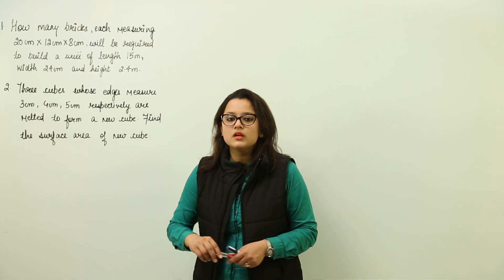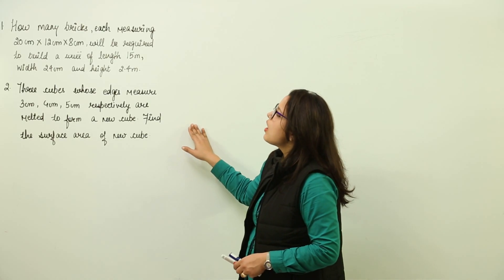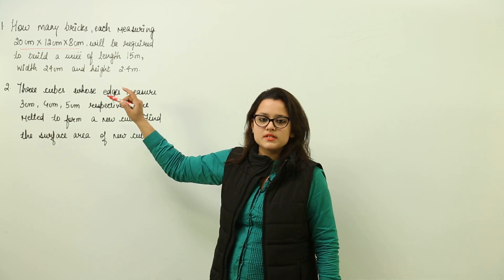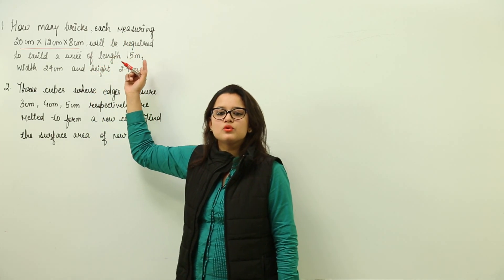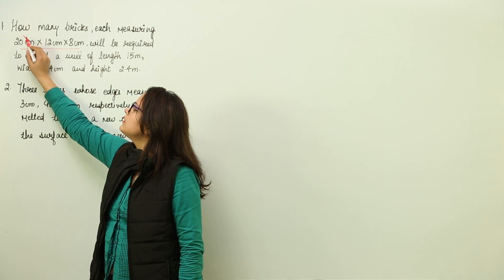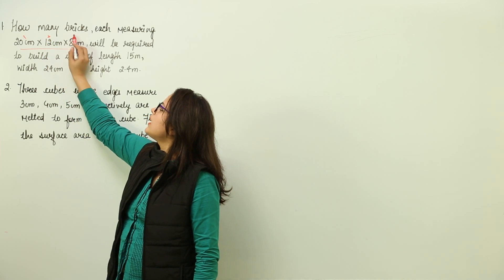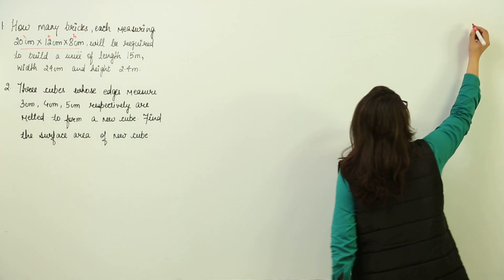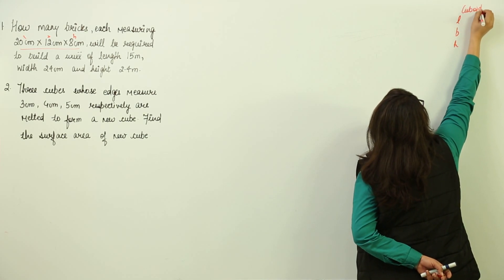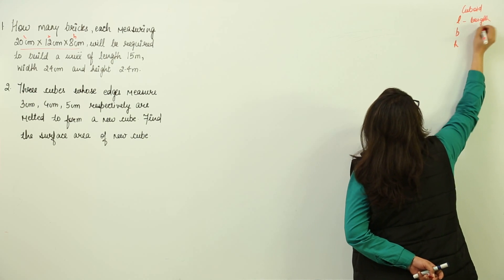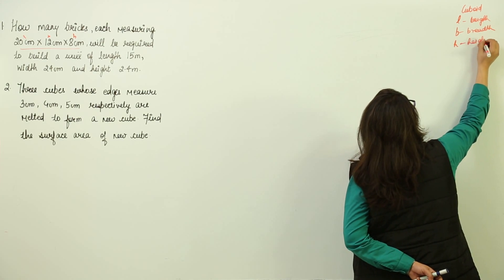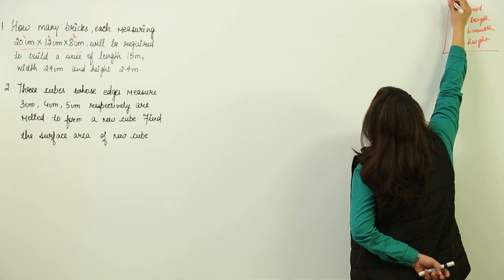Let's do some more questions. The question says how many bricks, each measuring this much, will be required. As we discussed, the brick is a cuboid in shape. A cuboid has length, breadth, and height. Here the cuboid has length as 20, breadth as 12, and height as 8. I am going to use the abbreviations L, B, H for the length, breadth, and height of the cuboid.